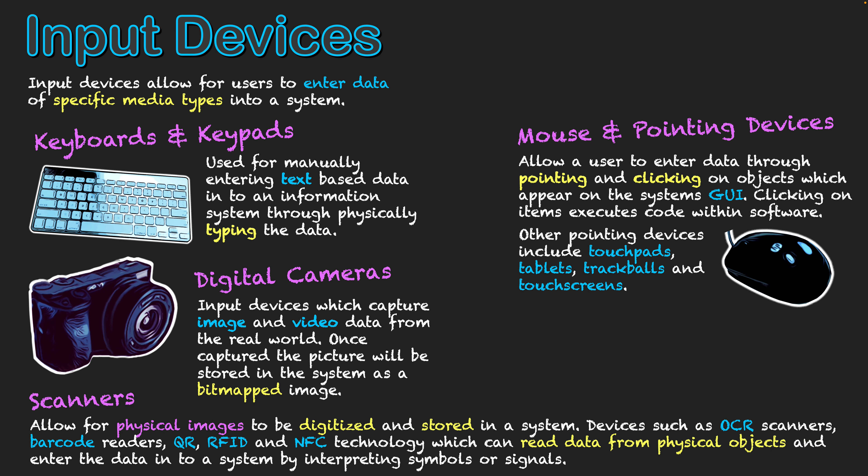The next area is scanners. Traditionally, scanners would allow physical images to be digitized — you'd place the object inside the scanner, the light would go over it, and that scanned image would be stored on the system. These days, devices have OCR scanners — optical character recognition — which can recognize letters and symbols on the scanned object. There are also other types of scanners such as barcode readers, QR, RFID, and NFC technology, which can all read data from physical objects.